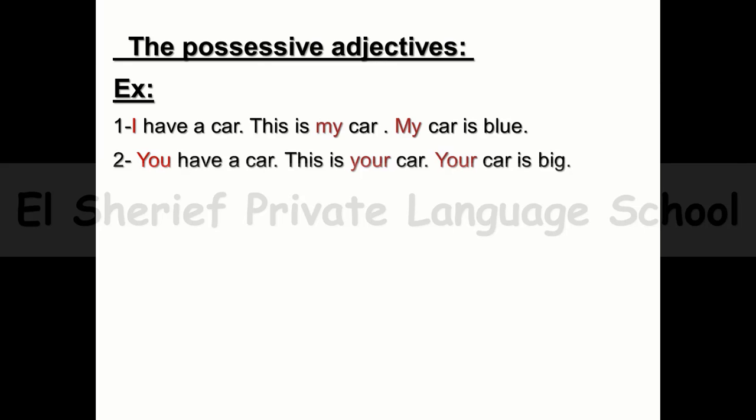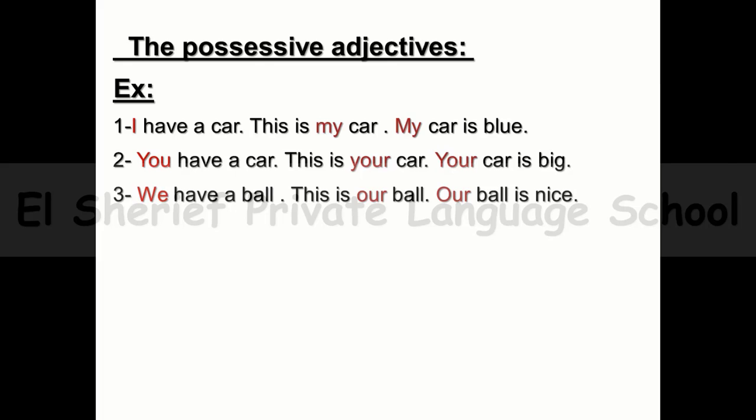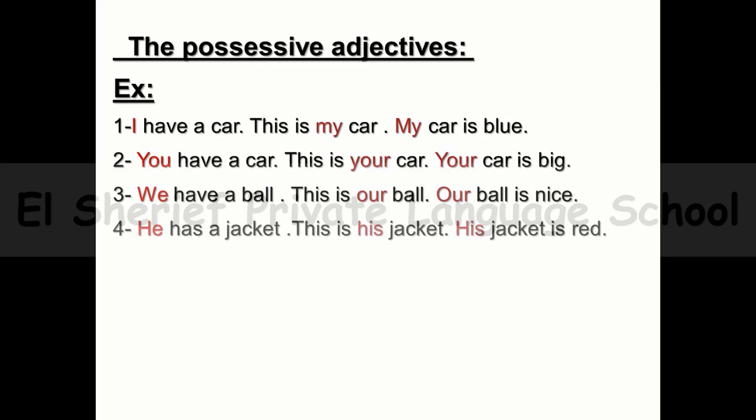Example three: 'We' takes 'our' — We have a ball. This is our ball. Our ball is nice. Example four: 'He' takes 'his' — He has a jacket. This is his jacket. His jacket is red.